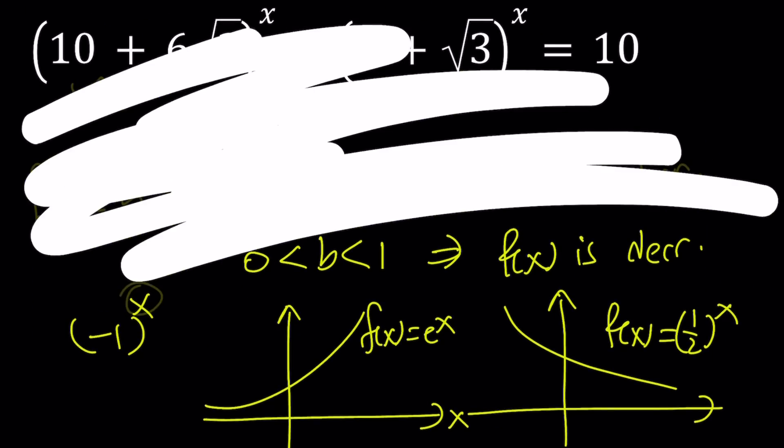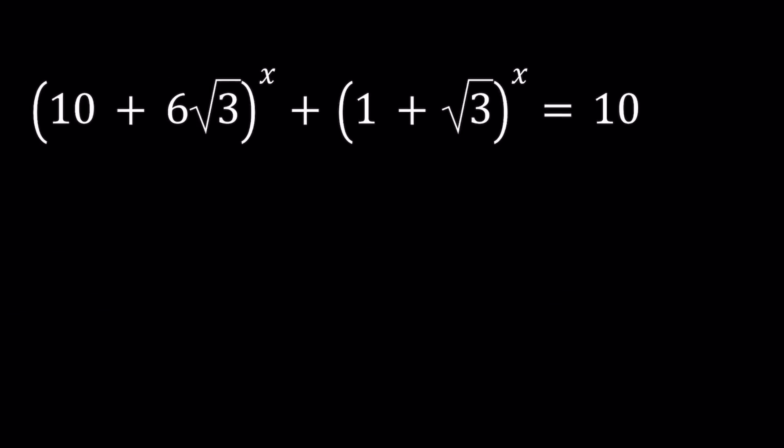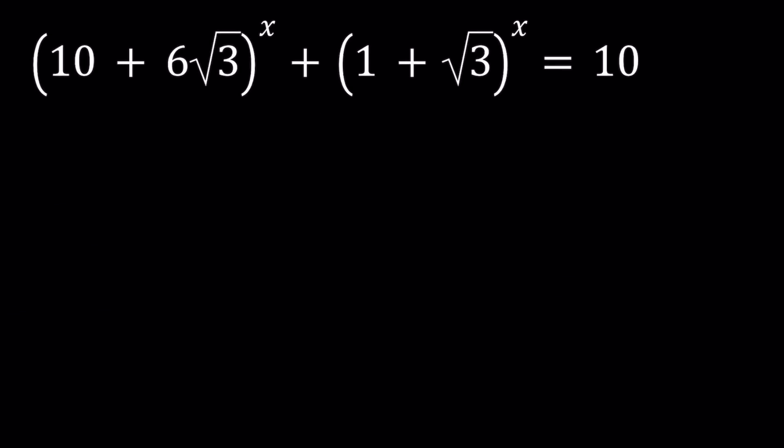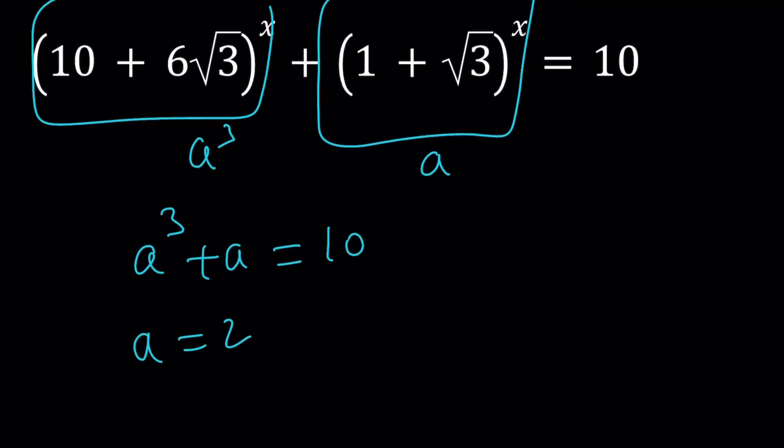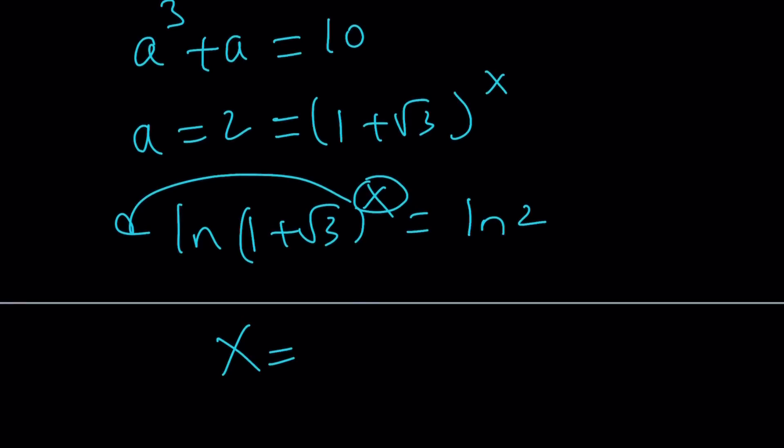Now here's what I have. If this number is a, this is a cubed. But I don't want to call this number a, I want to call the whole thing a. So if this is a, this is a cubed. And this is awesome because you're solving a very simple polynomial. a equals 2 is a solution. And if I set it equal to a, then I'll get the x value. If you log both sides, ln 1 plus root 3 to the power x equals ln 2. Move the x, divide, and you'll get the answer. That's it. But that's the real value.